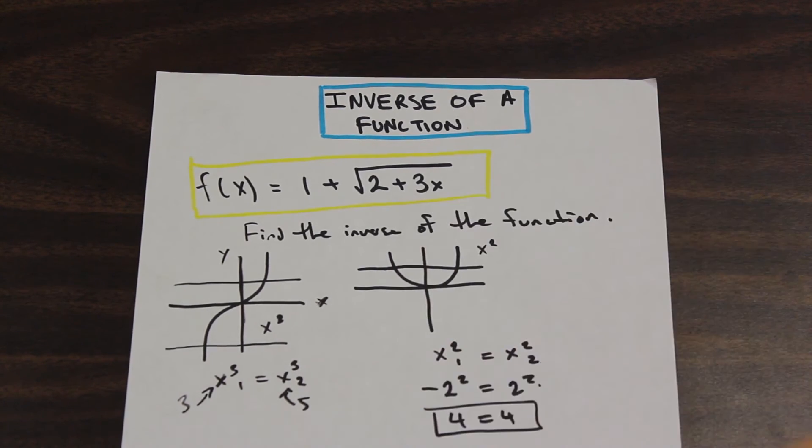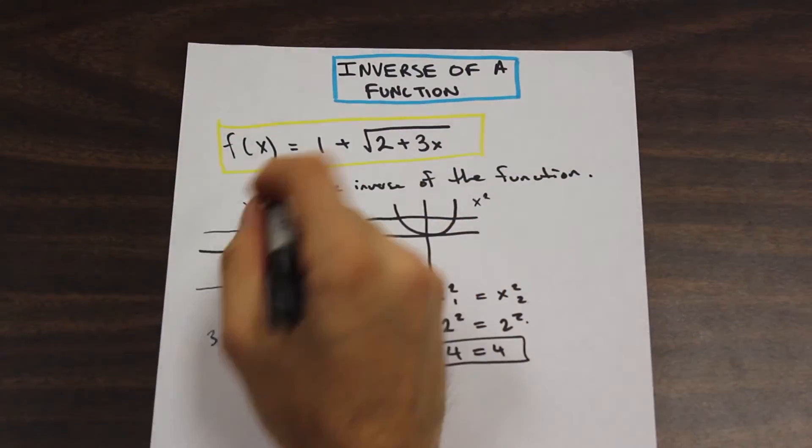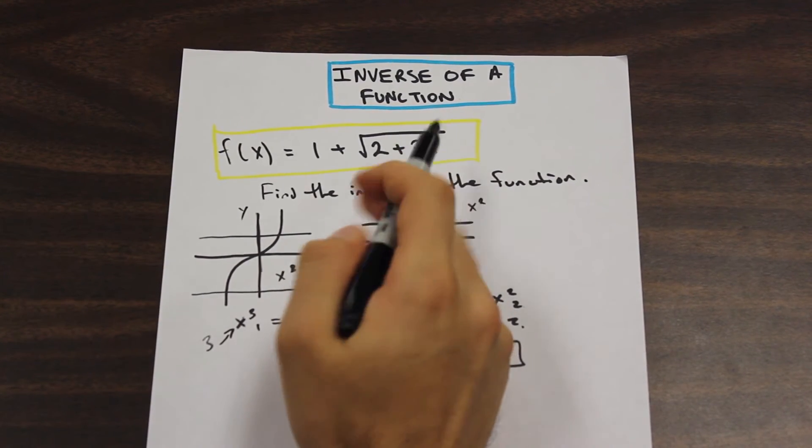And let's just solve this problem really quickly, and I'll show you the best way to do it. So we have y is equal to f of x is equal to 1 plus root of 2 plus 3x.